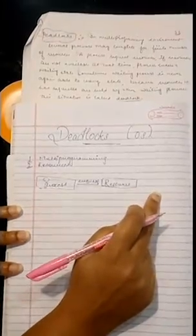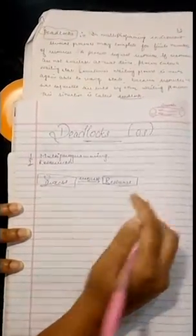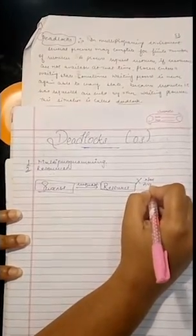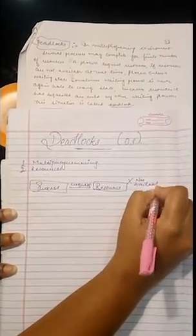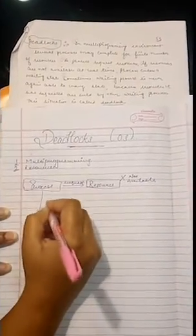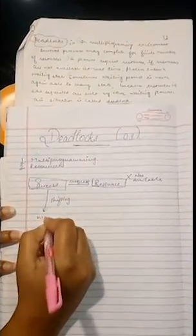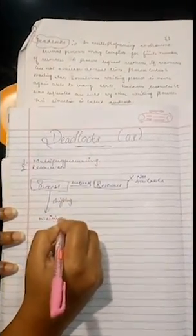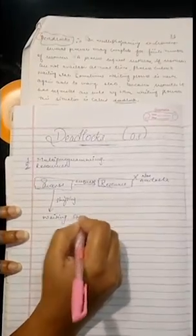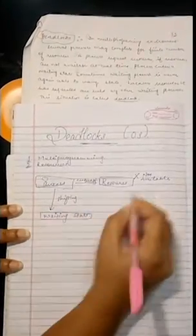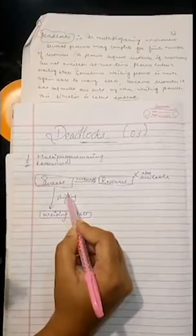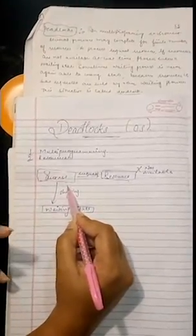But sometimes when resources not available, then what will happen? This process will start shifting into waiting state. Waiting state here is the state in which a process is waiting for one of the resources to be available to complete its process, its program, its completion.